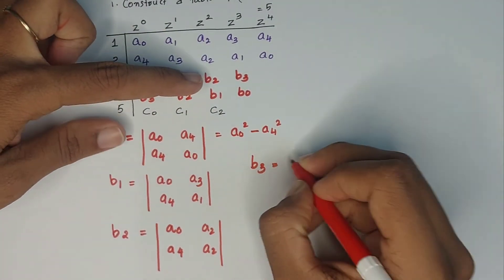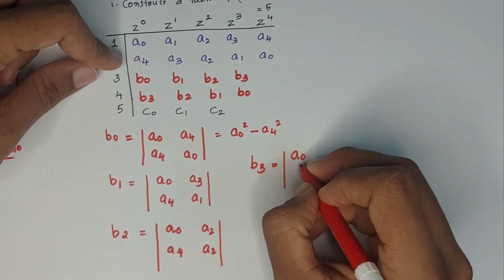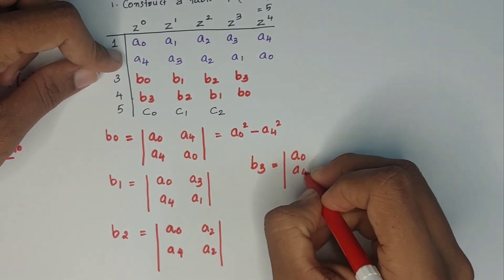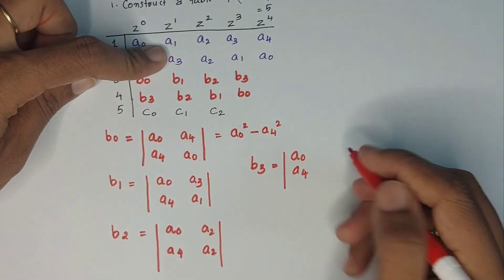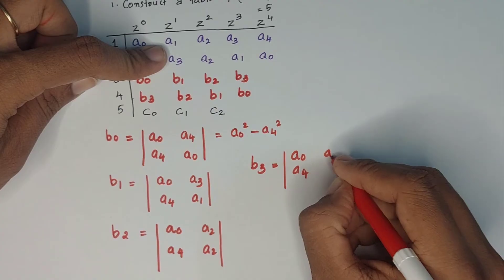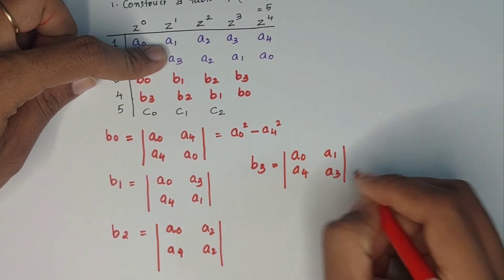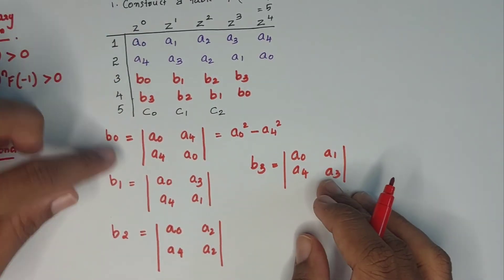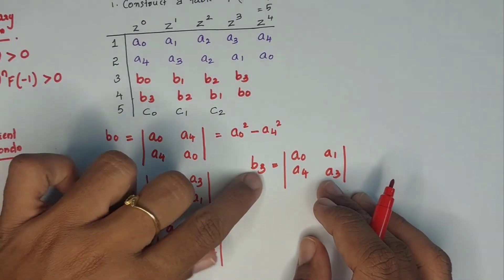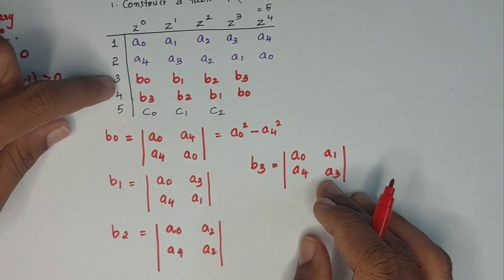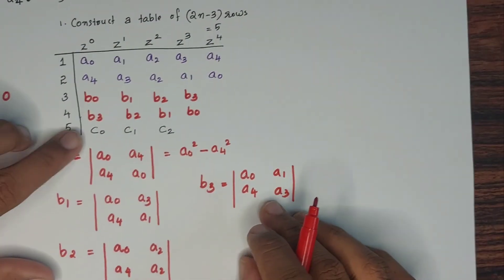B3 is the determinant of |A0, A4; A1, A3|. B1 is computed similarly, and B2 uses |A0, A4; A2, A2|. Once B0, B1, B2, B3 are known, you can fill in rows 3 and 4 of the table.